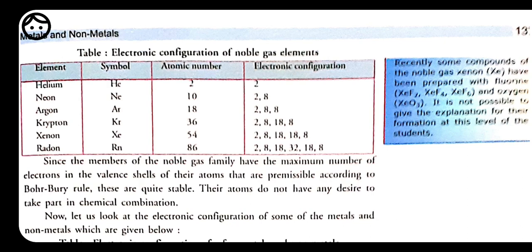We have four shells: K, L, M, and N. The K shell accommodates 2 electrons, L shell 8 electrons, M shell 18 electrons, and N shell 32 electrons. However, the outermost shell should always have only 8 electrons. If the outermost shell has more than 8 electrons, the element will not make bonds with anyone and cannot participate in reactions.